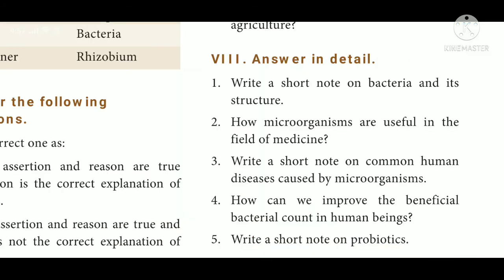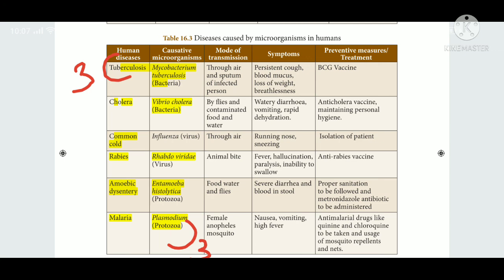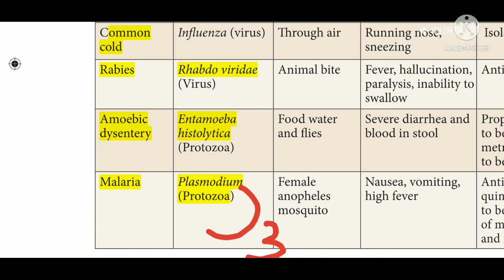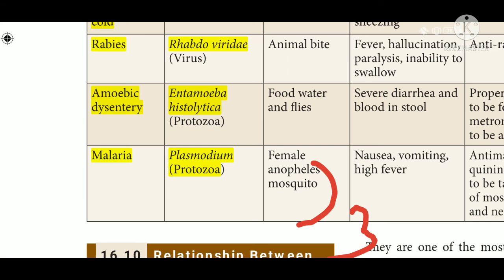Question 3: Write a short note on common human diseases caused by microorganisms. Answer from table 16.3: Tuberculosis — Mycobacterium tuberculosis — Bacteria. Cholera — Vibrio cholerae — Bacteria. Common cold — Influenza virus. Rabies — Rhabdoviridae — Virus. Amoebic dysentery — Entamoeba histolytica — Protozoa. Malaria — Plasmodium — Protozoa.